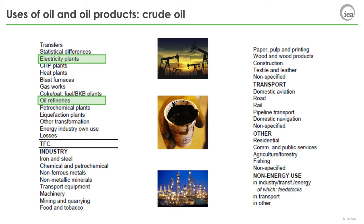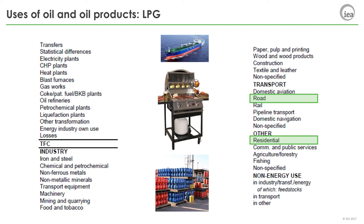Crude oil is mainly used in transformation processes such as refineries. In very few countries, crude oil is also used in electricity plants, which is again energy transformation. Liquid petroleum gas, or LPG, is commonly used in heating appliances or as a cooking fuel in canisters for grills. When LPG is used in an appliance, this is other use. If the appliance is in a home, this is residential, while if the appliance is used in a business or public sector building, this has the designation of commercial and public services.